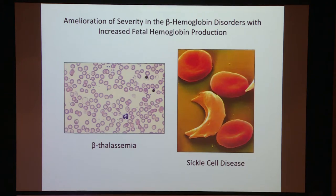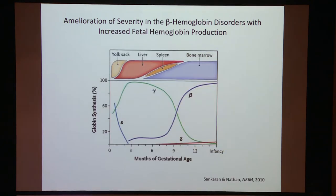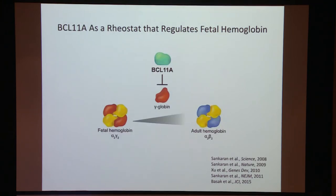Our initial interest in utilizing population-based studies really came from trying to understand why patients with the most common genetic blood disorders in the world — beta-thalassemia and sickle cell disease — vary in their clinical presentations. We knew that there was variation in the level of this fetal form of hemoglobin, gamma globin, that occurs after infancy when normally it's silenced, that explains much of the variation in patients with sickle cell disease and thalassemia. Using genome-wide association studies, we were able to identify a key regulator of this process: BCL11A.